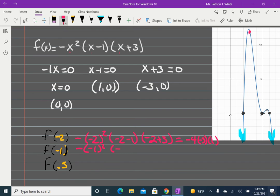Negative (-1) squared, (-1 minus 1), (-1 plus 3). Negative 1 times negative 2 times 2. That's going to give me negative 1, 4.